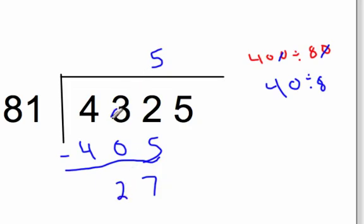And we end up getting 27, right, because I cross out the three here, and I'm going to borrow and make that. So I'm left with 27. 27 is less than 81, so we know actually that five is good.